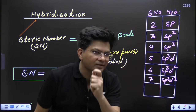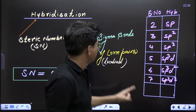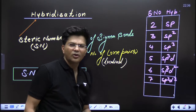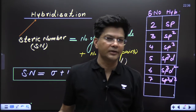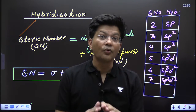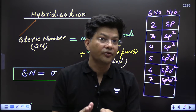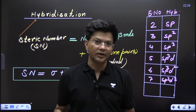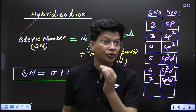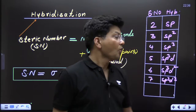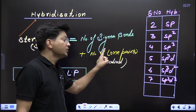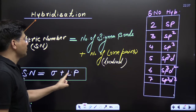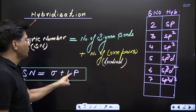Lone pairs — this is a very very important thing. We can count only those lone pairs which are localized. Localized means those which are not taking part in resonance. Back bonding is also a type of resonance, so the lone pair should not take part in resonance or back bonding. Only then can we count the lone pairs. Steric number = number of sigma bonds + localized lone pairs only.